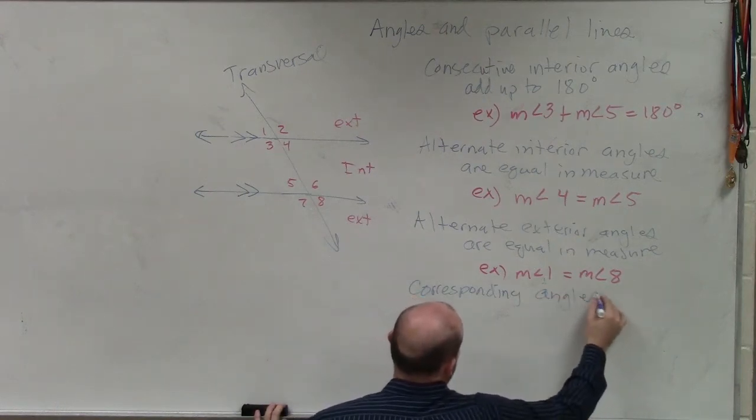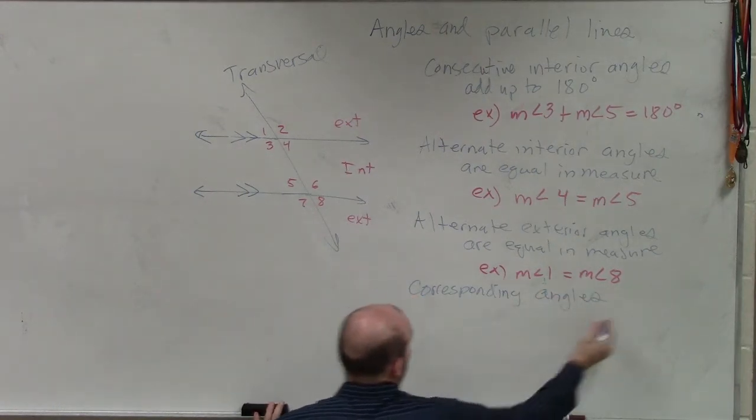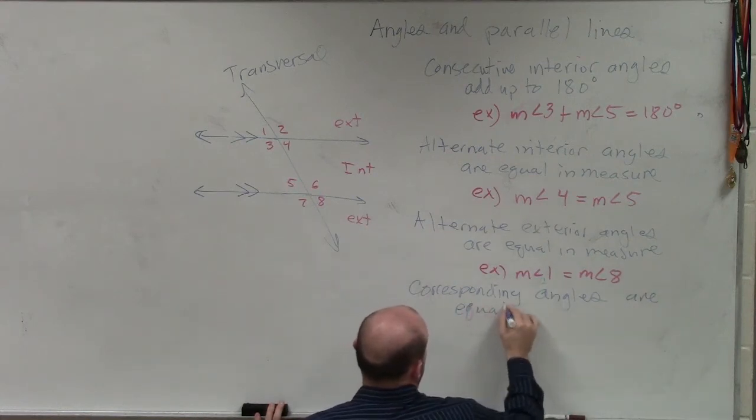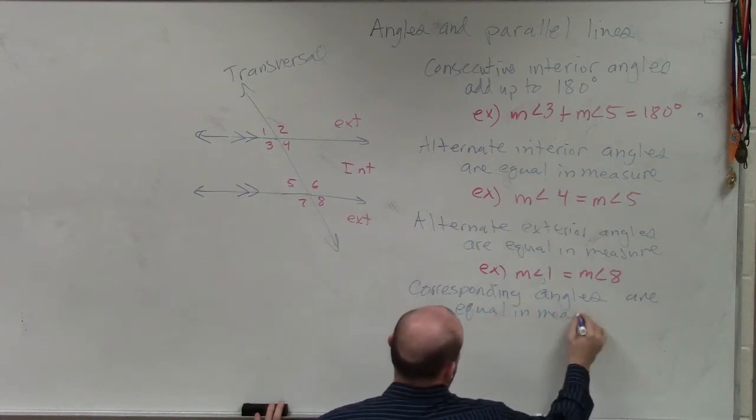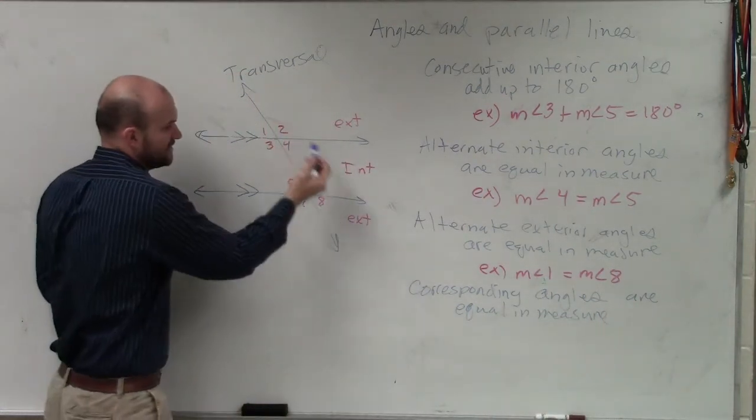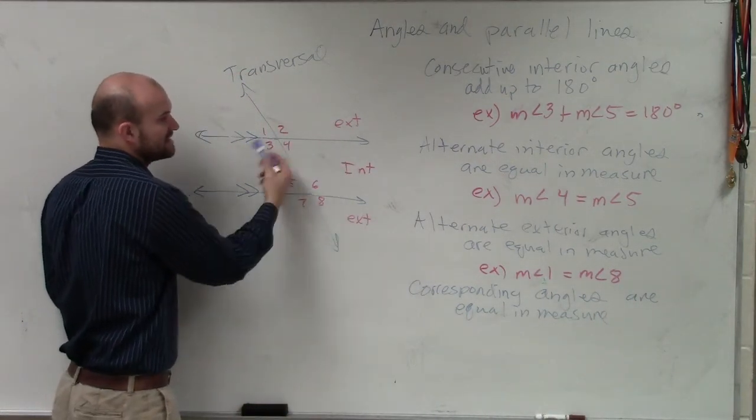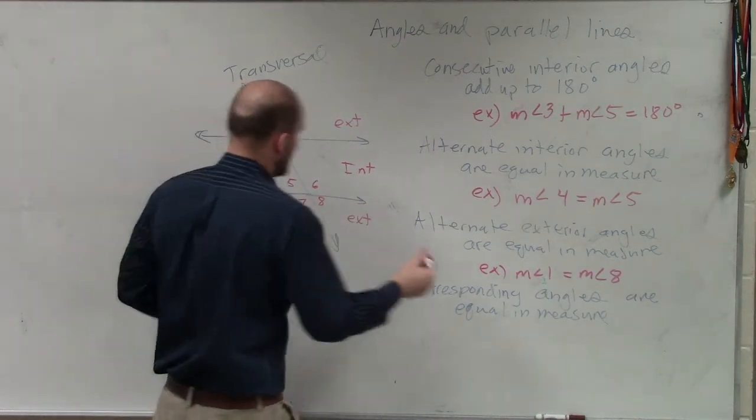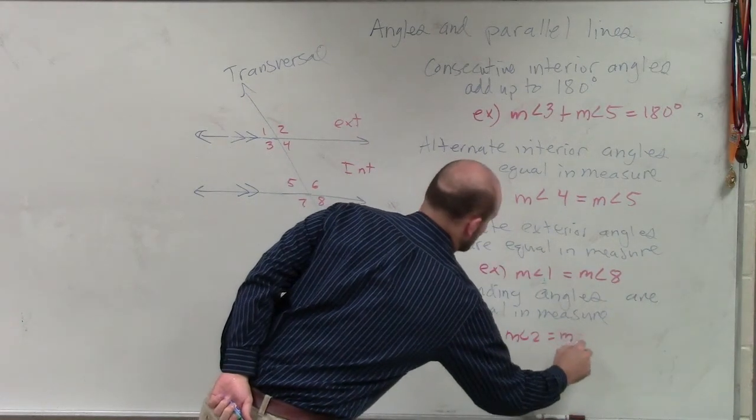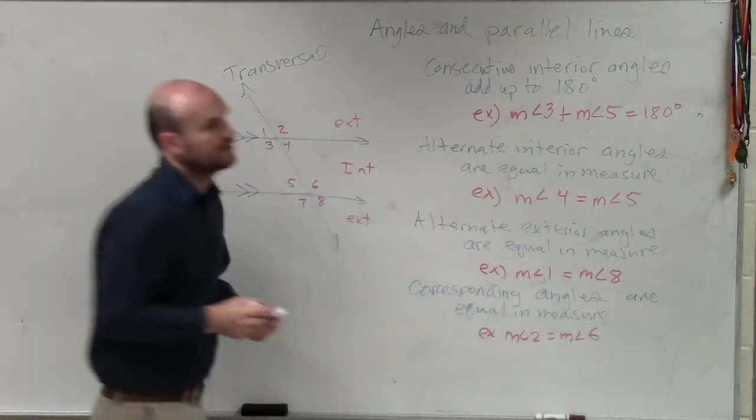The last one we talked about was corresponding. Corresponding angles are also equal in measure. So an example, remember, corresponding was one was interior, one was exterior, but they're in the same position. So what I can say is, example of measure of angle two is equal to measure of angle six. Okay?